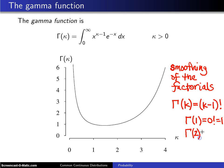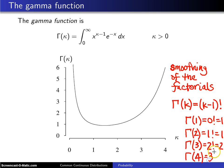Gamma of 2 will be 1 factorial, which is also 1. Gamma of 3 will be 2 factorial, which is 2. Gamma of 4 is 3 factorial, which is 6. So if I go to 1 on the graph and go to the gamma function, I get 1. If I go to 2, I again get 1. If I go to 3, I should be up to 2, and I am. And when you are at 4, it is all the way up here at 6.